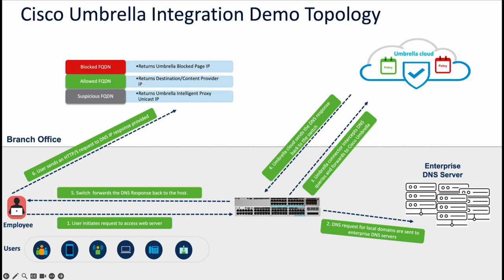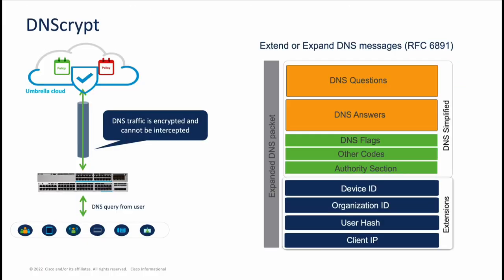When the switch receives the DNS query from the user, it creates an extended DNS record containing the organization ID, the client's IP address, and username information. These can be sensitive details that, if the DNS query is not encrypted, can be intercepted by an attacker. So Cisco Umbrella provides something called DNS crypt, which encrypts the DNS packets sent from the Cisco device to the Cisco Umbrella cloud server, since the extended DNS information contains such sensitive data.